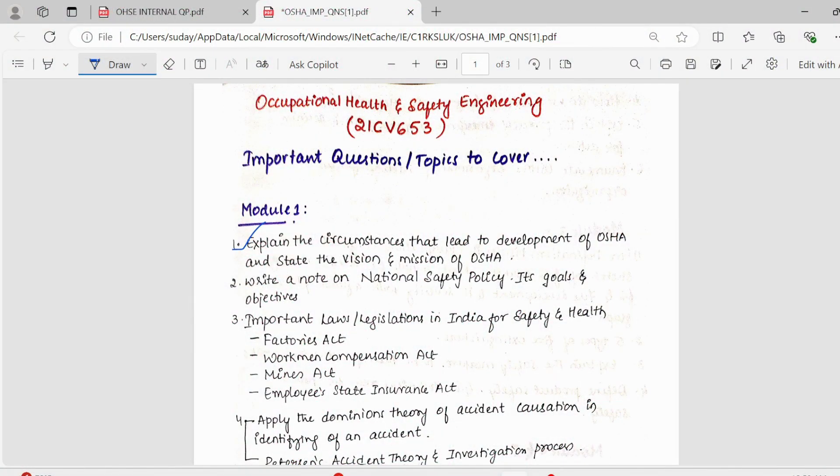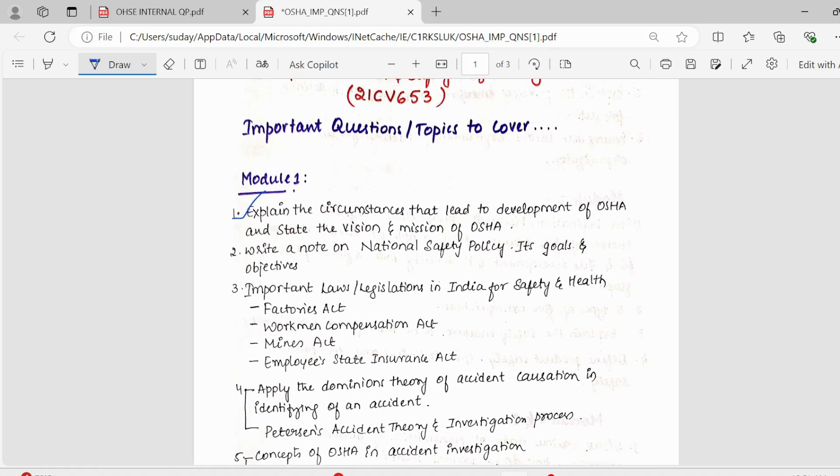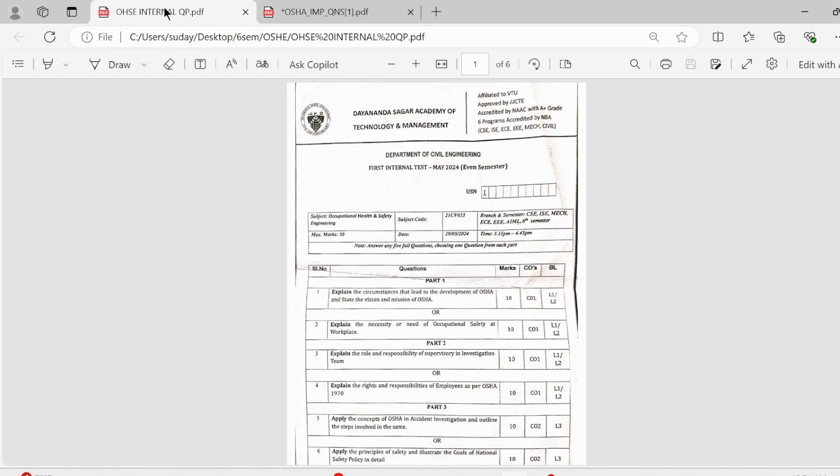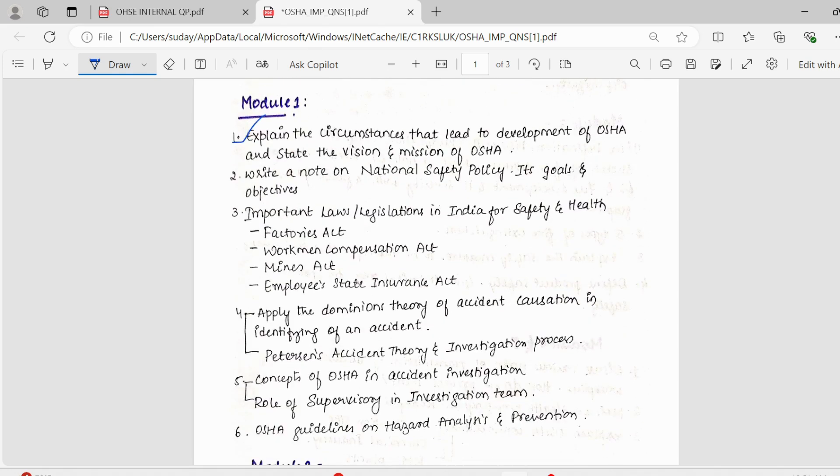In this video, we'll be looking into the important questions of Occupational Health and Safety Engineer, subject 421CB653. OSHA being one of the easiest subjects among open electives, it has a standard set of questions which are repeated every year. Make sure you cover these questions which I have noted down first. I have formulated these questions by comparing the previous few papers and the internal three papers. Let's move on to the topics one by one.